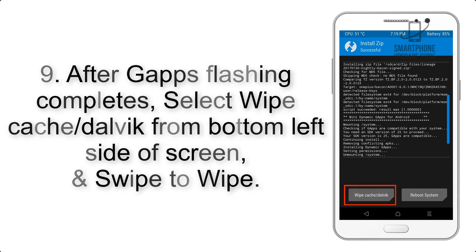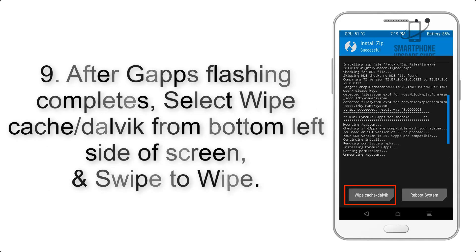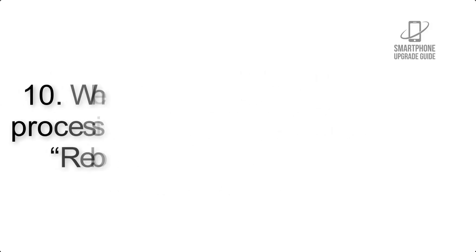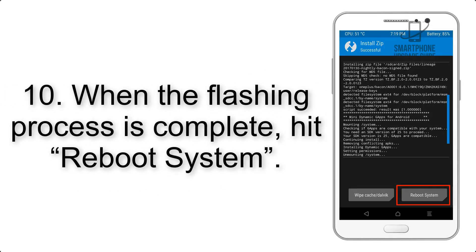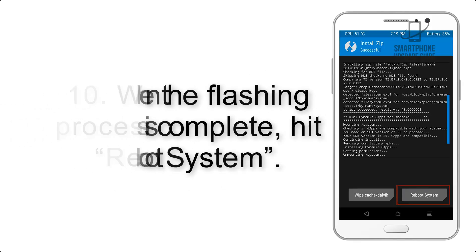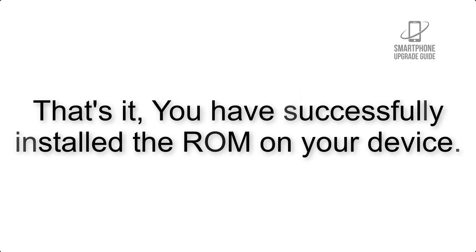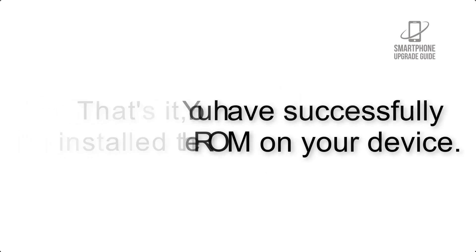Step 8: Flash the GApps zip package in the same manner. Step 9: After GApps flashing completes, select Wipe Cache and Dalvik from the bottom left side of the screen and swipe to wipe. Step 10: When the flashing process is complete, hit Reboot System. That's it — you have successfully installed the ROM on your device.